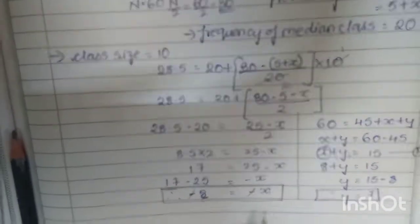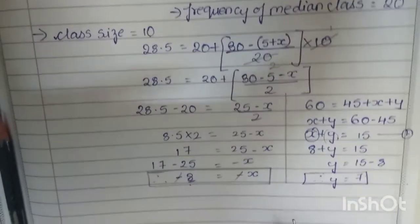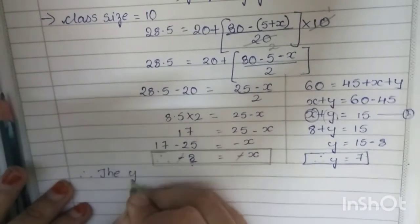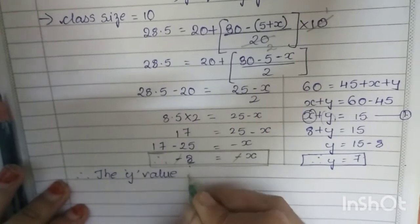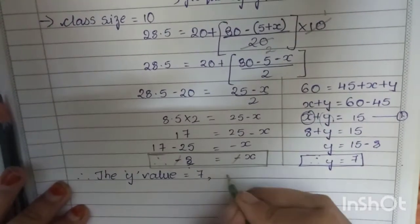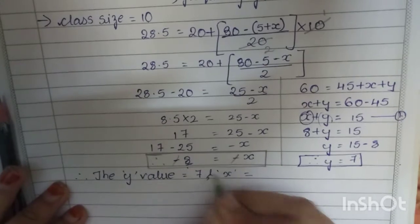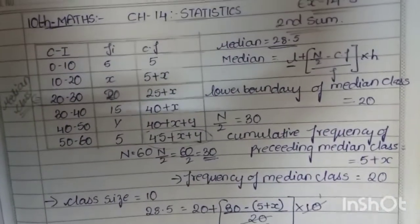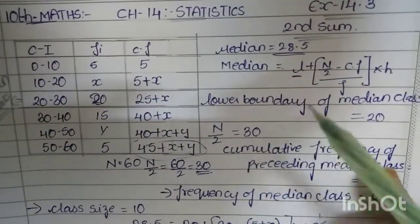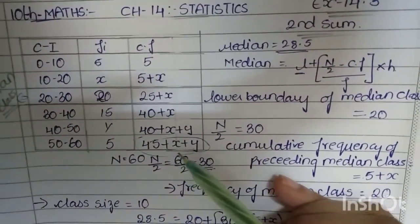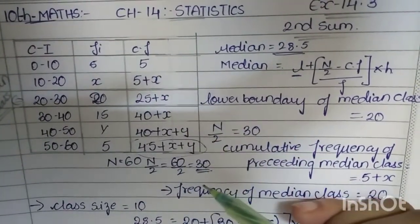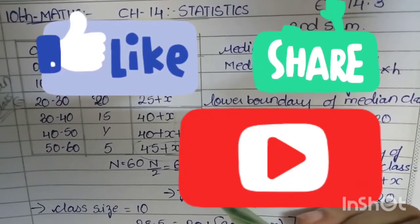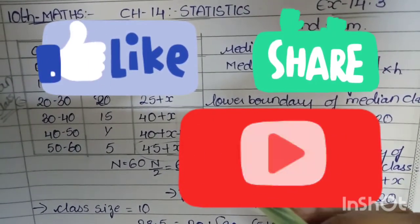So we have found both values: x equals 8 and y equals 7. In this way, when the median is given, we find the actual values of the unknown variables x and y. Thank you for watching. Please subscribe to my channel, hit the bell icon for the latest updates, share it with your friends, and please like it. Thank you.